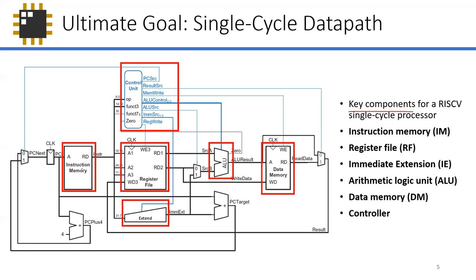Just like cooking, we have main ingredients. In a single cycle data path, we have key components: the instruction memory, which you've already built in ME1; the register file, also built in ME1; immediate extension, which we'll discuss today; the arithmetic logic unit or ALU, also today; the data memory, already built; and the controller, which we'll discuss a bit today and mostly next meeting.